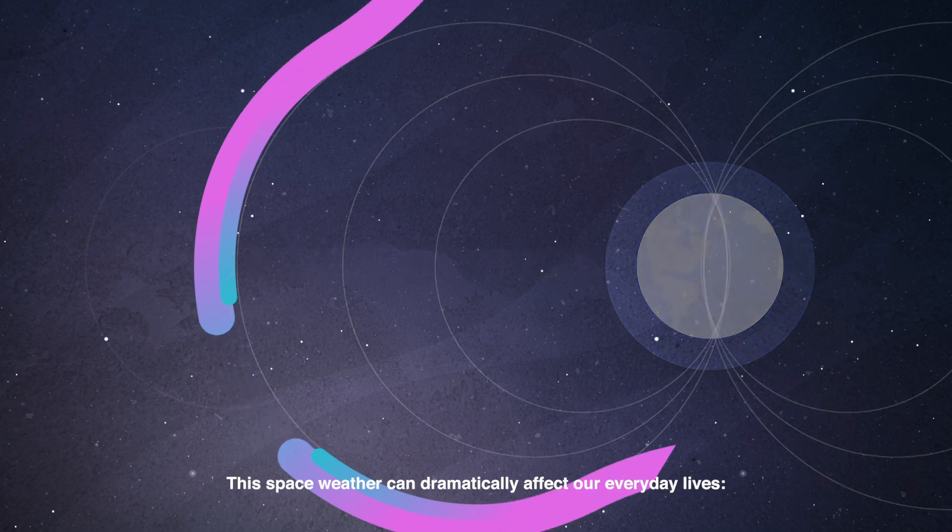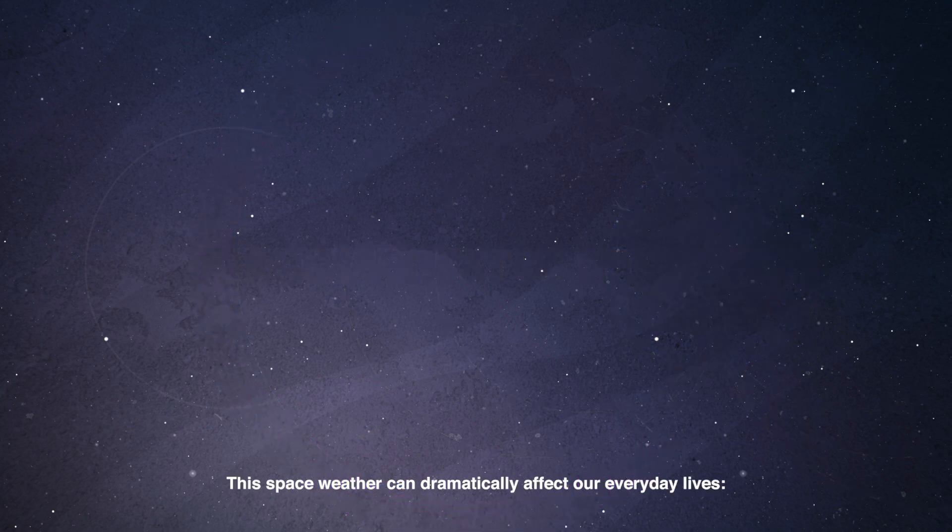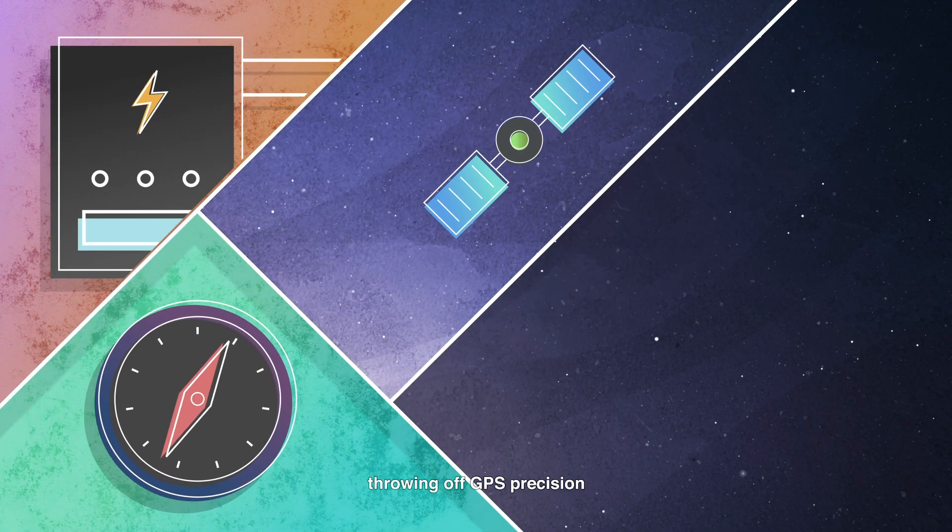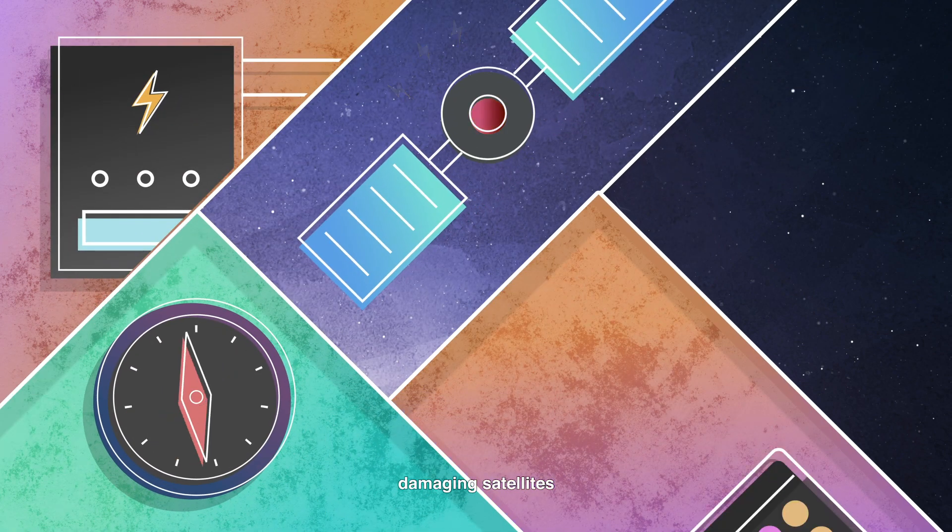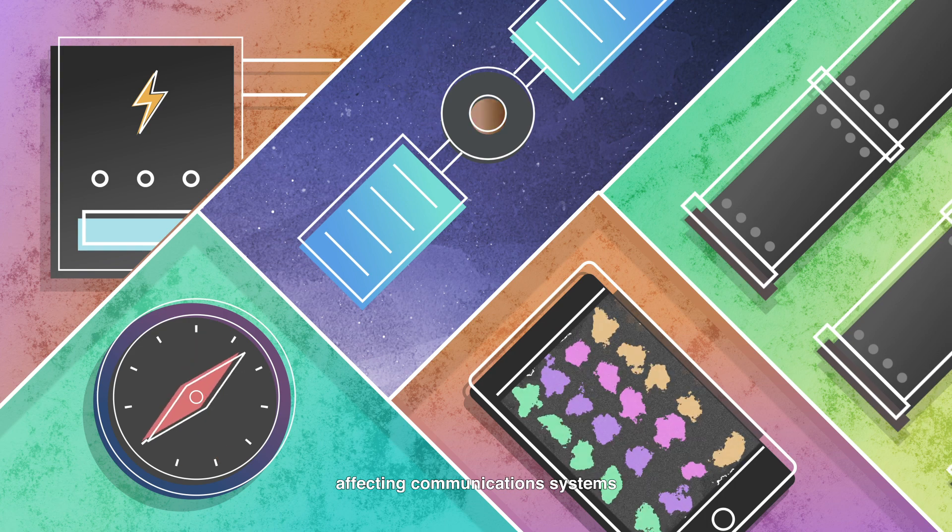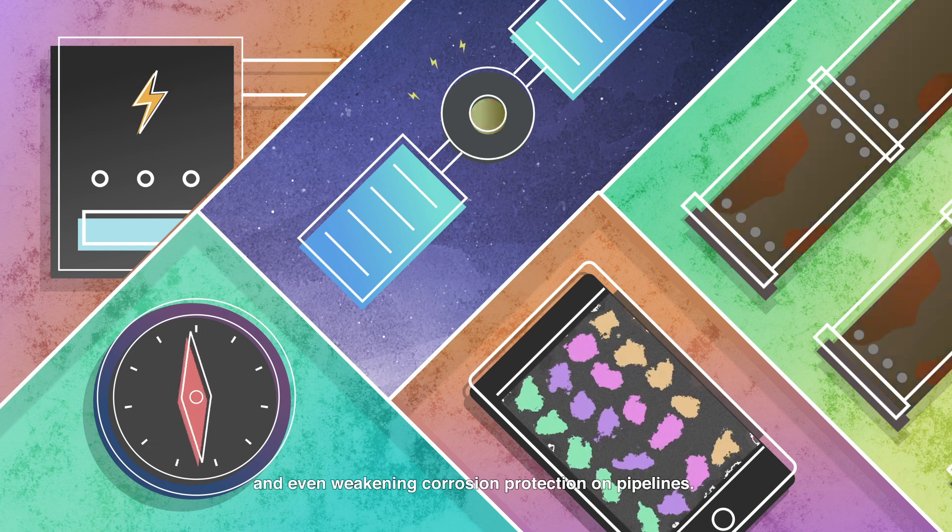This space weather can dramatically affect our everyday lives, causing power systems to fail, throwing off GPS precision, damaging satellites, affecting communication systems, and even weakening corrosion protection on pipelines.